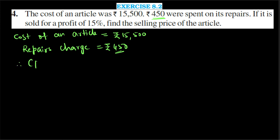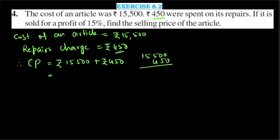Therefore, cost price equals Rs. 15,500 plus Rs. 450. Adding these: 15,500 plus 450 equals Rs. 15,950. This is the cost price of the article.